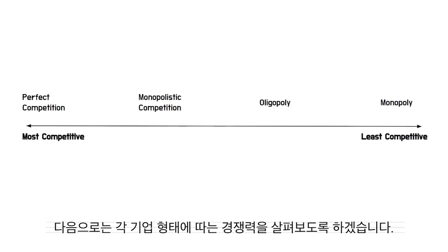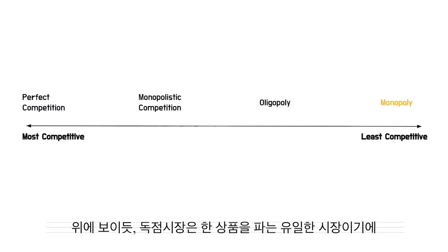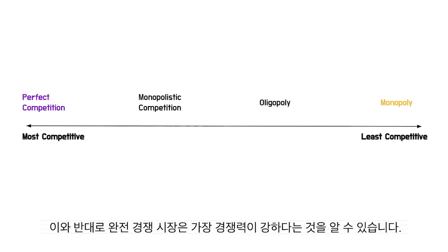Next, we may see how competitive each firm is with the spectrum of market competitiveness, which is above. And as we see, the Monopoly is at the right end of the line, which means it is the least competitive type of market. This may be true because Monopoly is a firm that is a single seller of a product. Comparing to that, perfect competition is the most competitive type of market.